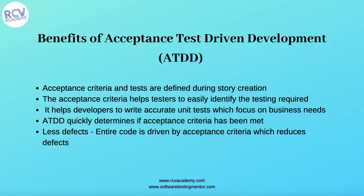The fifth benefit is that ATDD results in fewer defects, because the entire code is written and driven by the acceptance criteria, or the test cases defined from those acceptance criteria. This reduces the number of defects in the end product. These are the benefits of the Acceptance Test Driven Development approach.